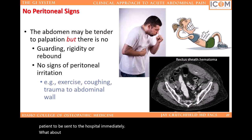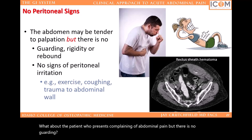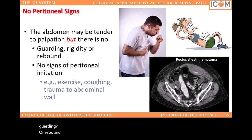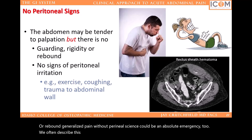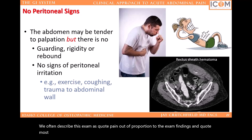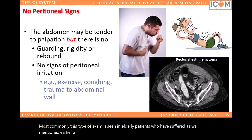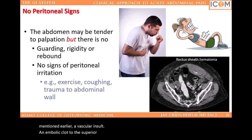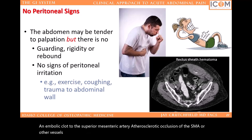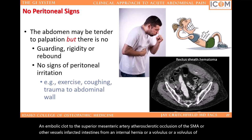What about the patient who presents complaining of abdominal pain but there is no guarding or rebound? Generalized pain without peritoneal signs could be an absolute emergency too. We often describe this exam as 'pain out of proportion to the exam findings.' Most commonly, this type of exam is seen in elderly patients who have suffered a vascular insult — an embolic clot to the superior mesenteric artery, atherosclerotic occlusion of the SMA or other vessels, infarcted intestines from an internal hernia, or a volvulus of the stomach, small bowel, or colon.